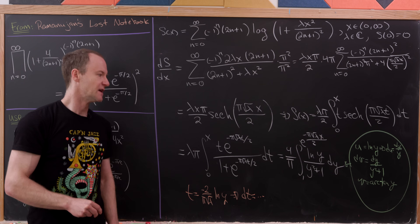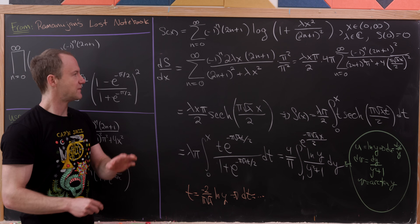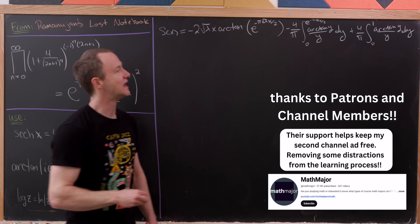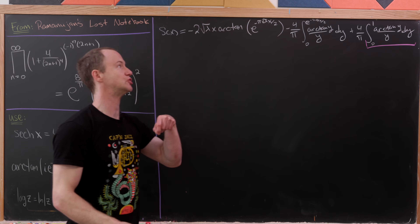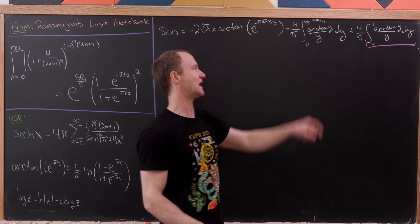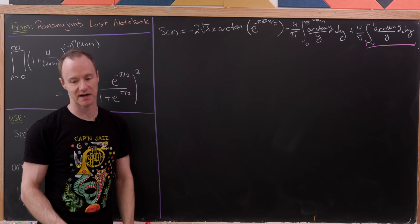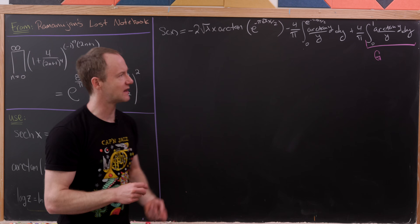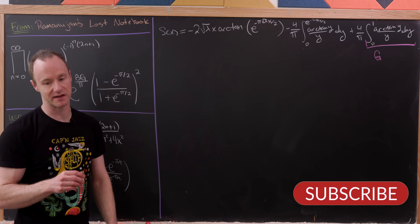Now do integration by parts: set u = ln(y) (so du = dy/y) and dv = dy/(y^2+1) (so v = arctan(y)). Using the formula integral(u dv) = uv - integral(v du), we split the integral. The original integral from 1 to the upper bound becomes an integral from 0 to that upper bound minus the integral from 0 to 1. The integral from 0 to 1 of arctan(y)/y dy equals the Catalan constant g — this follows from expanding as an infinite series and using the definition of g.